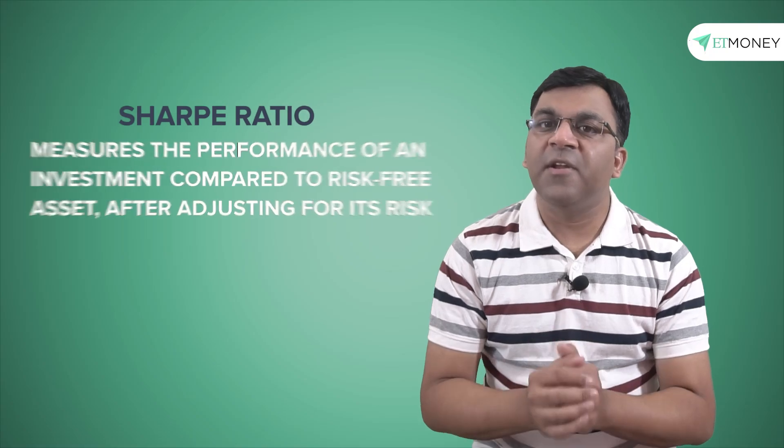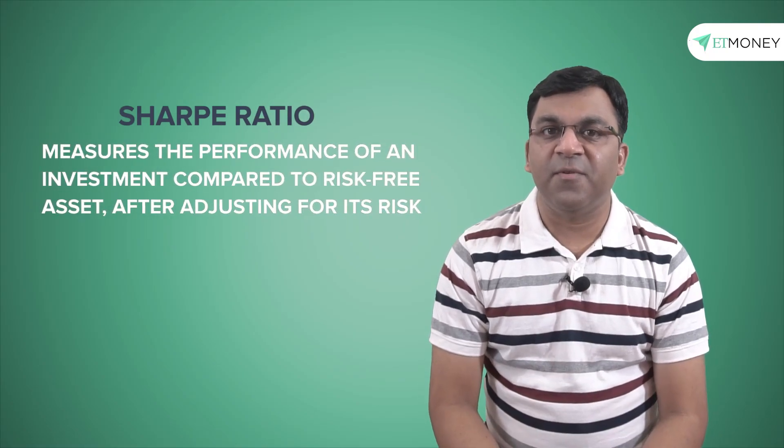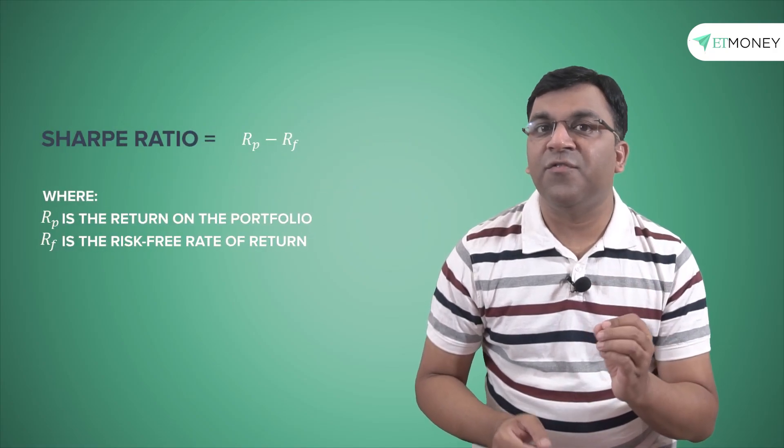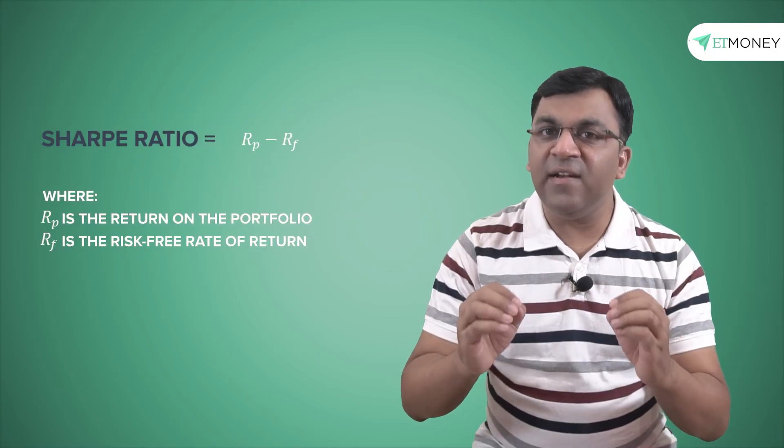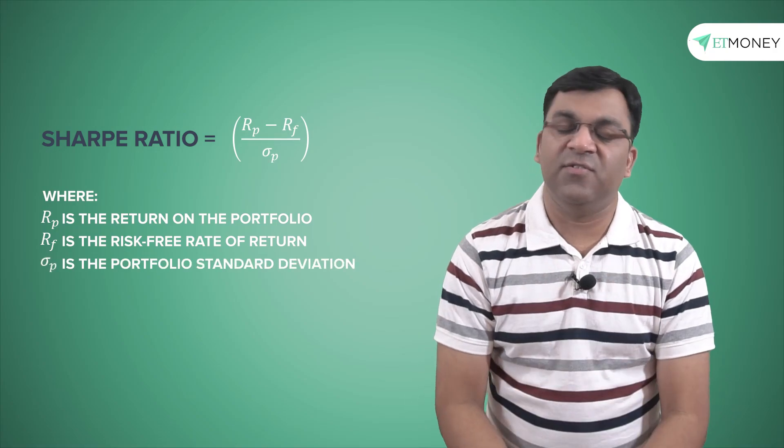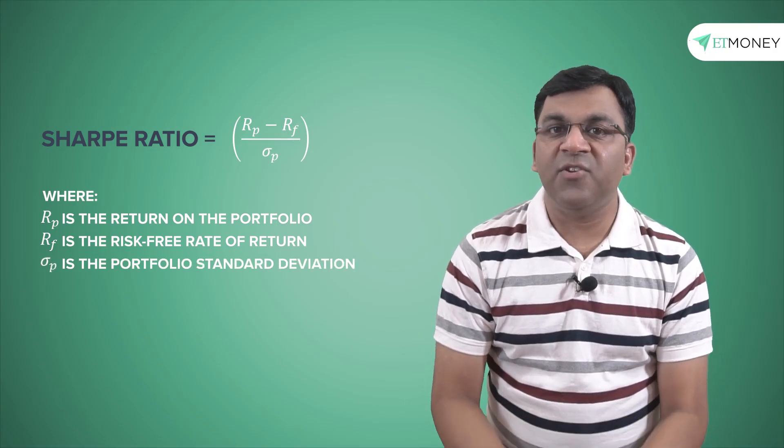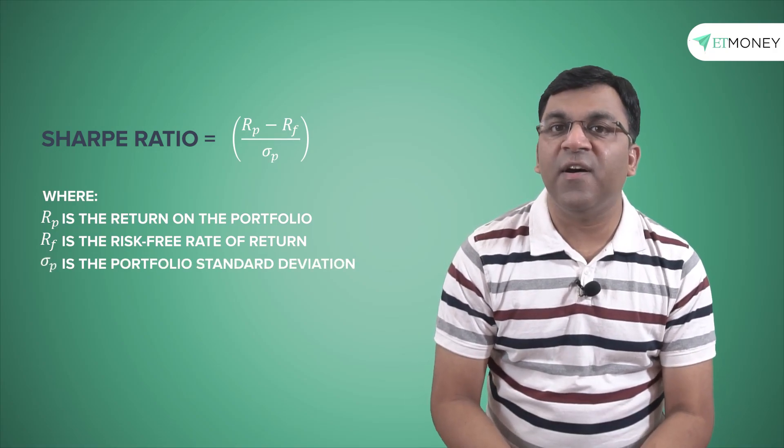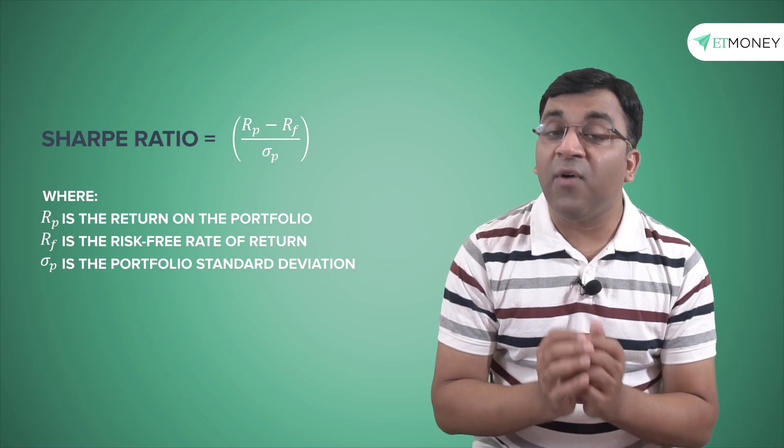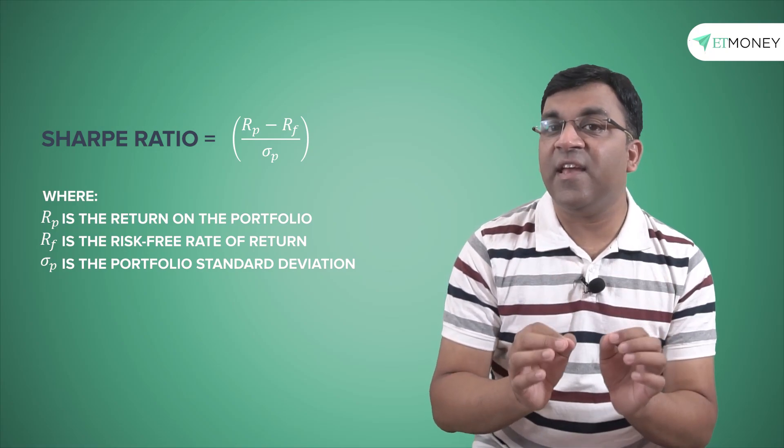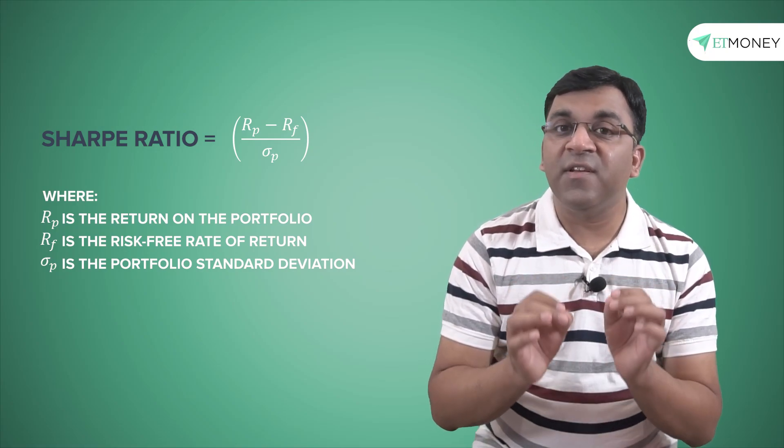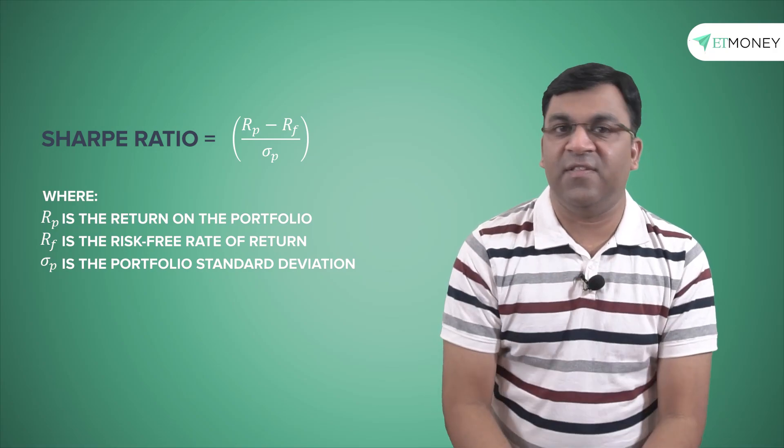The Sharpe ratio measures risk-adjusted performance and is calculated by subtracting the risk-free rate of return from the fund's return and then dividing the result by the standard deviation. In other words, the Sharpe ratio indicates whether a mutual fund's returns are due to the wise investing decisions taken by the fund manager or was it the result of taking excessive risk. Let's understand this by comparing two funds.